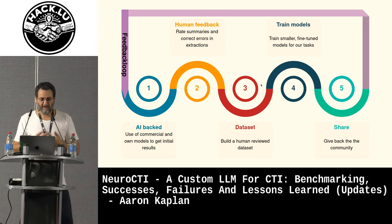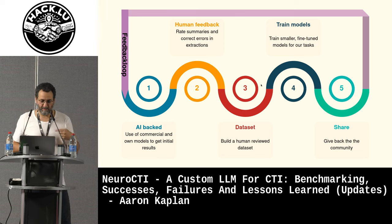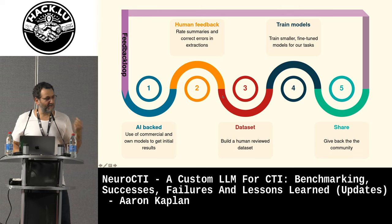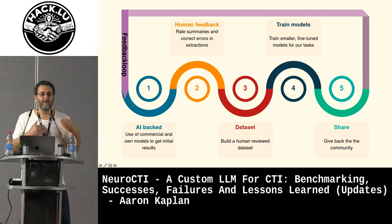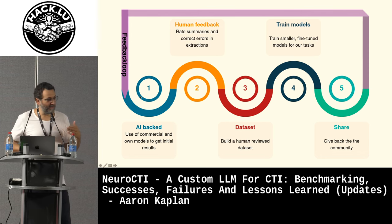We're now in a positive feedback loop — an upward spiral. We have an AI backend, we use it, we get human feedback on the output, we create a new dataset, we train models, and then share that and improve again. The more we do it, the better we get. That's a positive feedback loop.